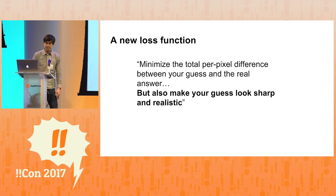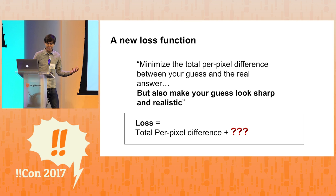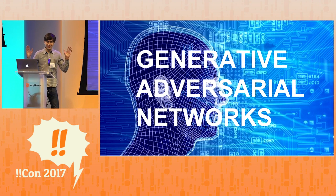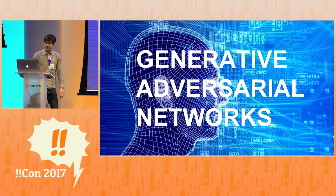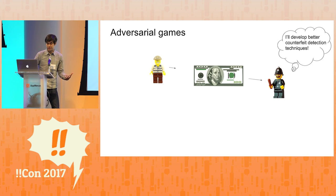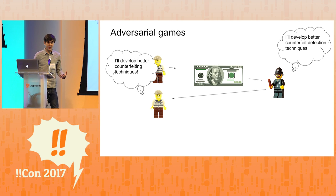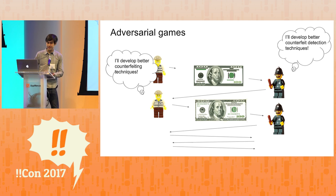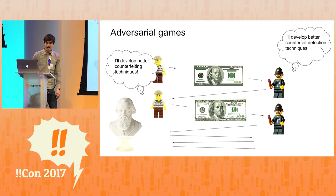So how can we do that? Well, we can come up with a new loss function that minimizes that total per-pixel difference but also makes the guess look sharp and realistic. That's where we come to generative adversarial networks. This is a cool idea that was invented in 2014 by a grad student named Ian Goodfellow, and it was inspired by adversarial games. As an example of an adversarial game, you might imagine the example of people counterfeiting money. The counterfeiters make some fake bills, they look okay and they work for a while, but eventually the police catch on and develop better techniques for catching those counterfeit bills. Then the counterfeiters develop better counterfeit bills, the police catch on to that, and so on. You see this adversarial dynamic in lots of different places like online fraud or DRM in music.